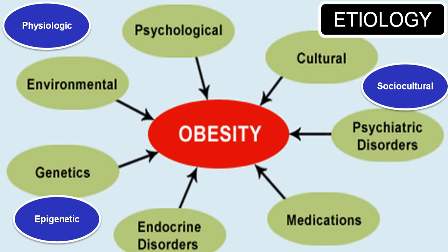Obesity has multifactorial etiology, which can be physiological, epigenetic, or sociocultural. Physiologically it can be environmental or psychological. Genetic and hereditary factors play a role. Endocrine disorders such as Cushing's syndrome and hypothyroidism are known to produce obesity. Certain medications increase fat and weight. Psychiatric drugs like lithium increase body weight. Cultural dietary habits and psychological factors are also involved.